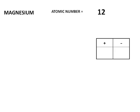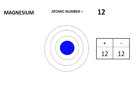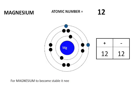Magnesium has an atomic number of 12, which means 12 protons and 12 electrons. Starting with the symbol Mg, we place two electrons in the first shell and eight in the second shell, giving us 10 so far, which means we have two valence electrons. Magnesium is part of group number two. For magnesium to become stable, it can either lose two electrons or gain six electrons, since a total of eight can fit in that shell.